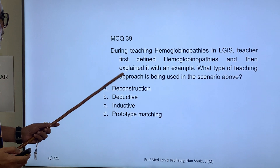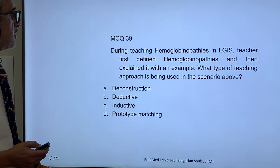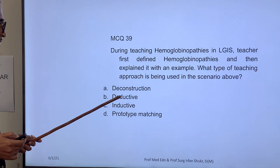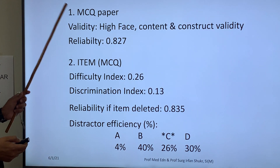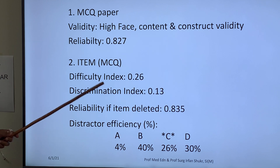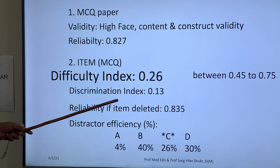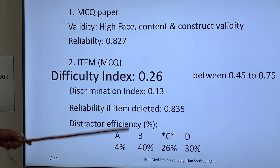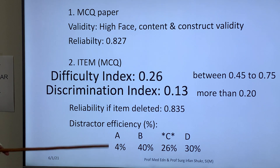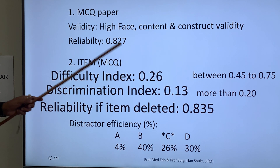Third example: During a lecture on hemoglobinopathies, the teacher first defined hemoglobinopathies and then explained with an example. What type of teaching approach was used? Options: deconstruction, deductive, inductive, prototype matching. Since the paper is the same, validity and reliability remain the same, but item values differ. Difficulty index is 0.26 — not in the ideal range. Discrimination index is 0.13 — not in the ideal range. Reliability if item deleted is 0.835, which has increased compared to the overall paper reliability.